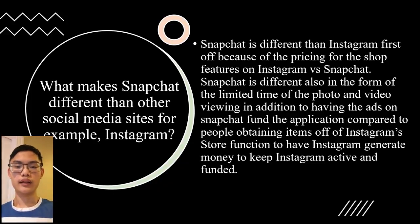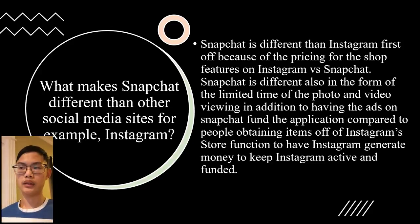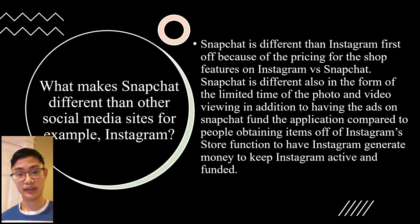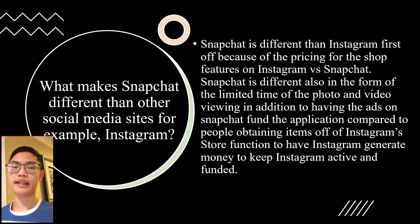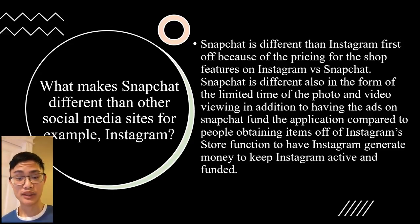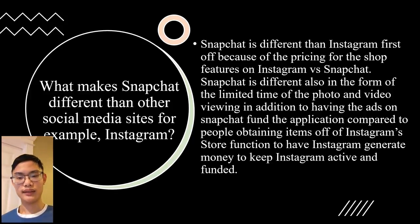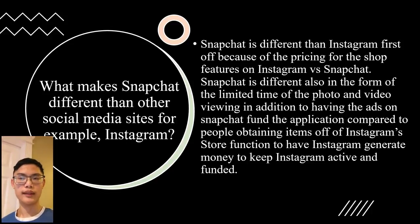One of the key differences that makes Snapchat different from other social media sites, such as Instagram, is the pricing for sales and shopping that Instagram has from its Instagram Store versus Snapchat's ad revenues. Another difference is that Snapchat has a limited time for photos and videos, so content can be uploaded and seen for a shorter period of time, compared to Instagram where posts stay until you delete them.